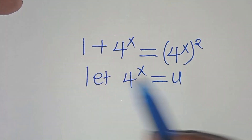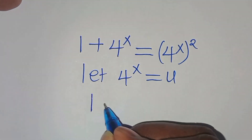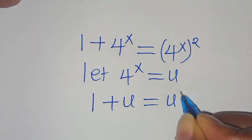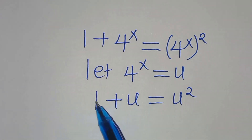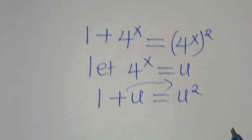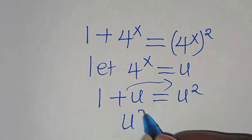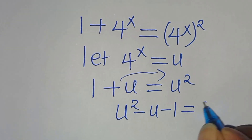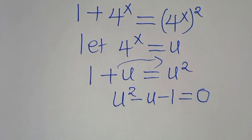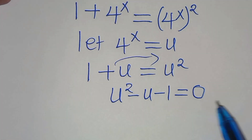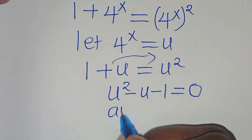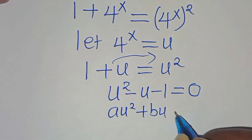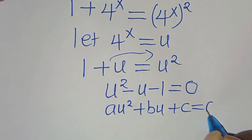We let 4 to the power of x equal u. Substituting gives 1 plus u equals u squared. Rearranging to the right-hand side, we get u squared minus u minus 1 equals 0.